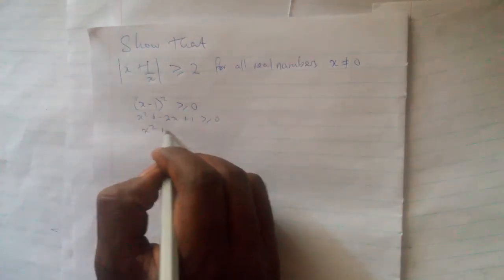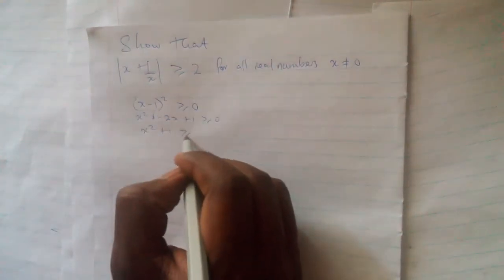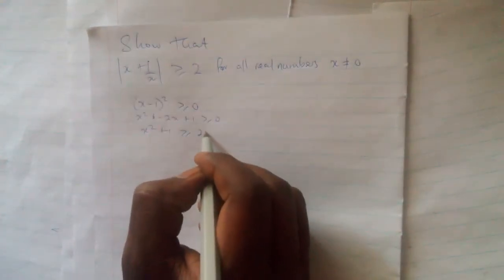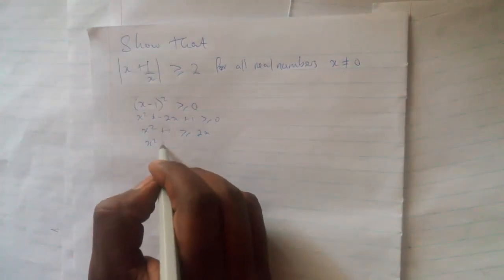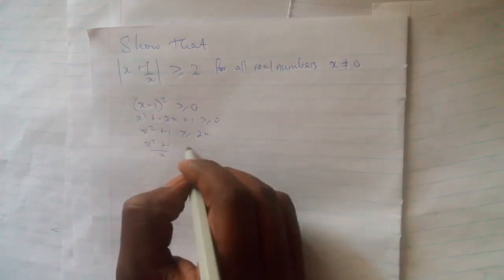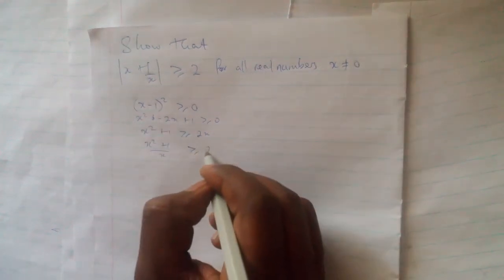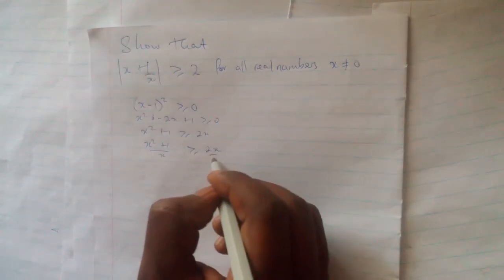Taking 2x to the right-hand side, we get x squared plus 1 is greater than or equal to 2x. Then dividing this expression by x, we have x squared plus 1 over x is greater than or equal to 2x over x.